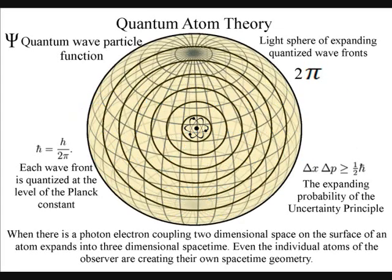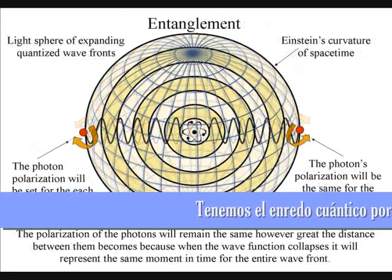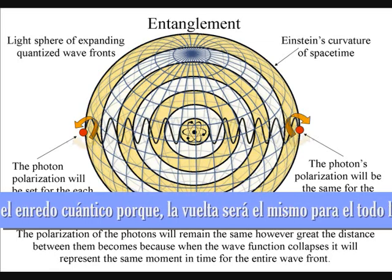The polarization of the light will be the same for the entire surface of the light square, creating quantum entanglement and the symmetry and geometry of spacetime.